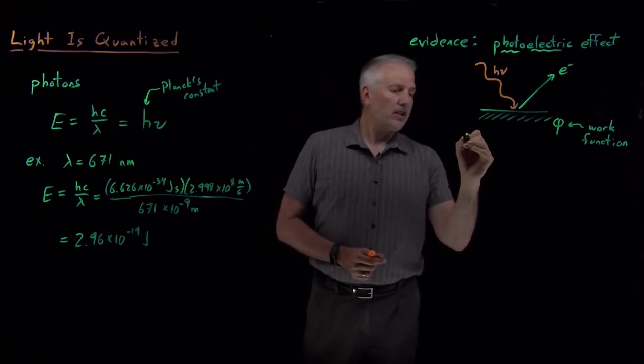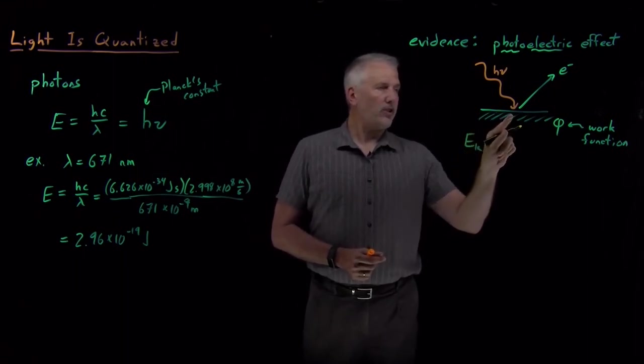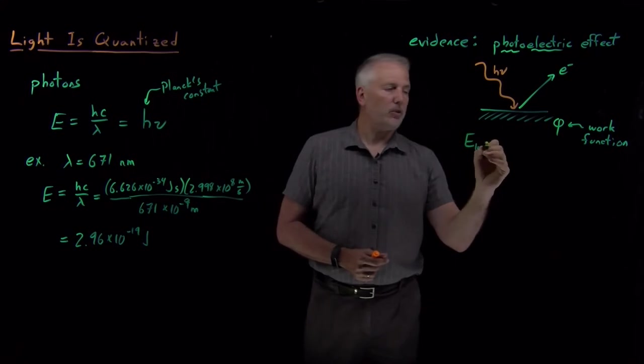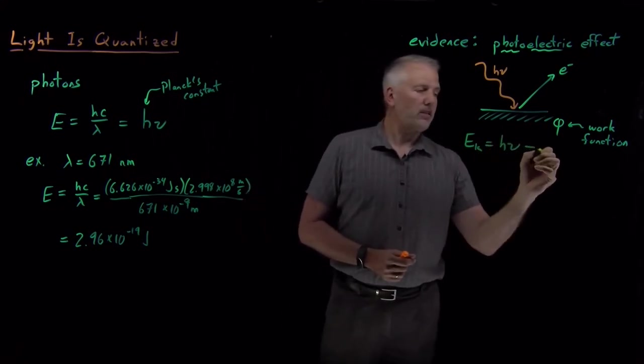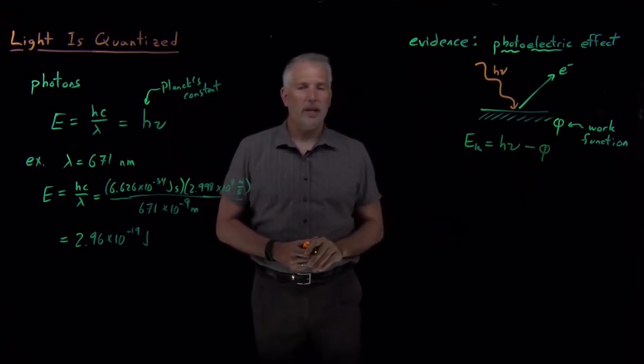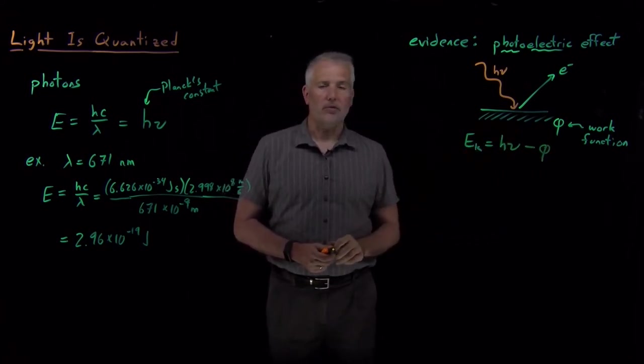In terms of equations, the kinetic energy of the electron, the energy with which that electron leaves, is equal to however much energy I sent in, the energy of the photon, minus the energy I had to pay to remove the electron from the metal surface, the work function.